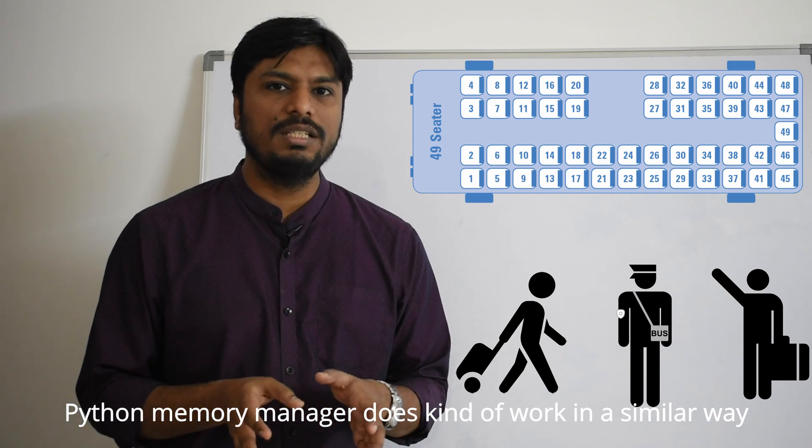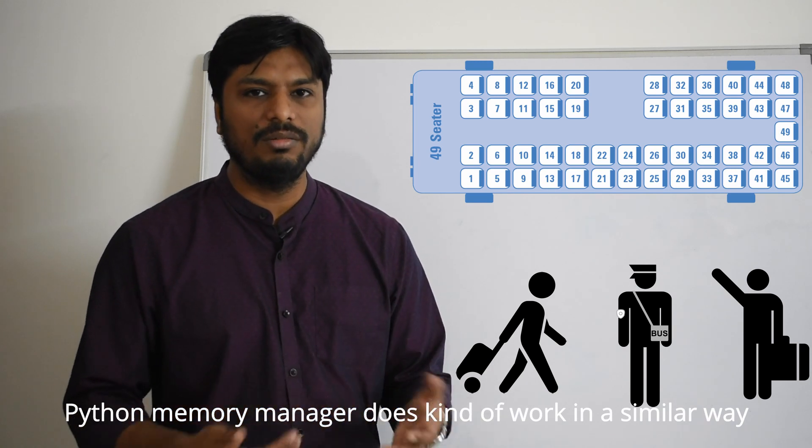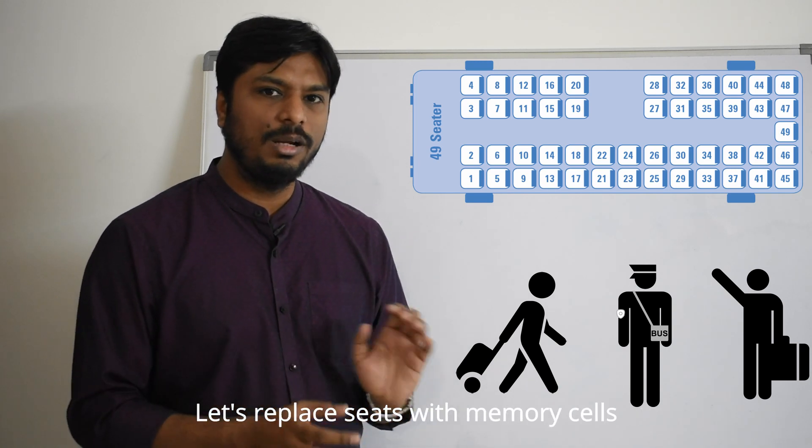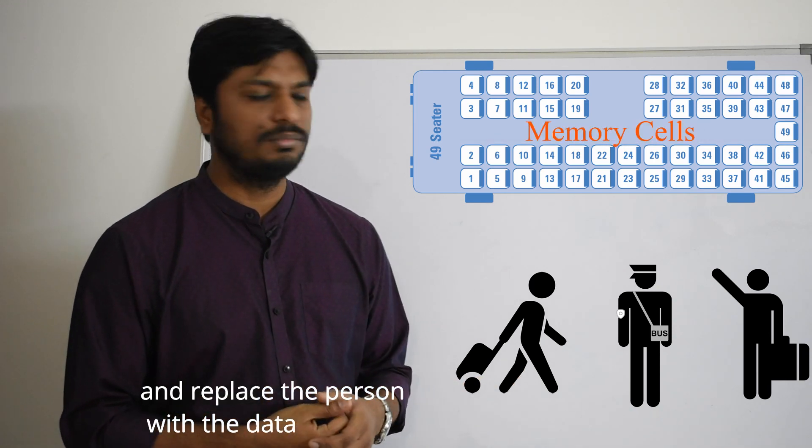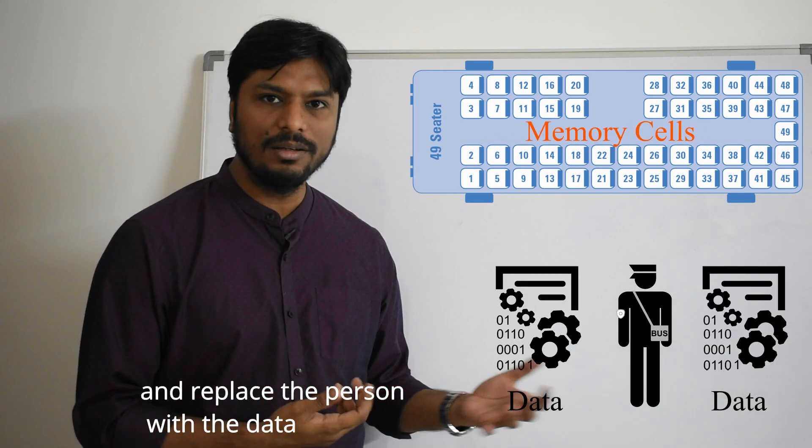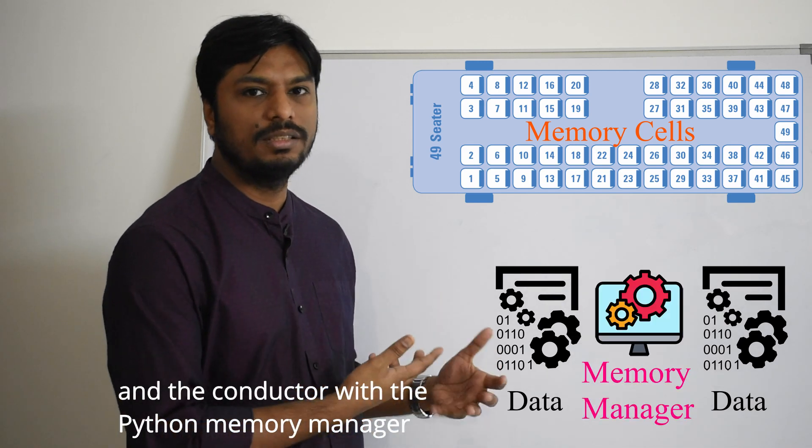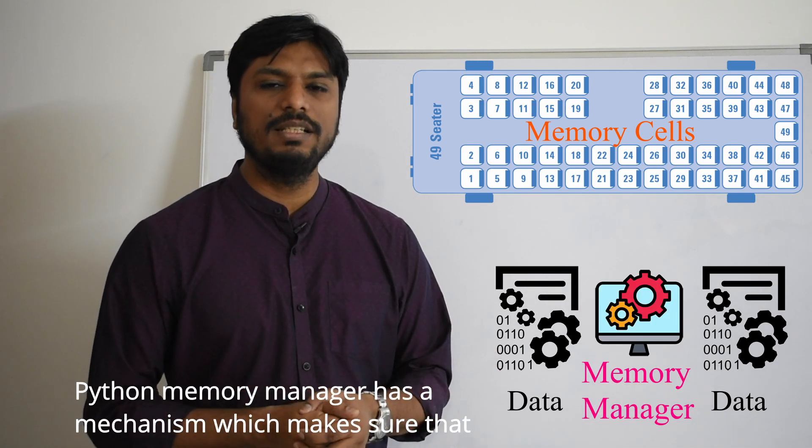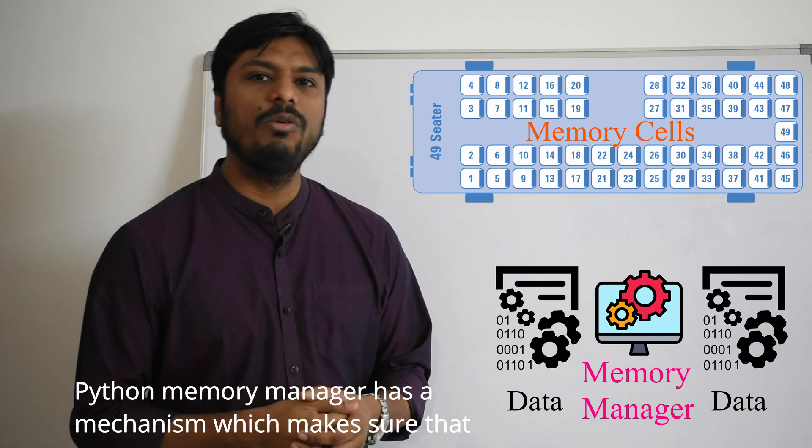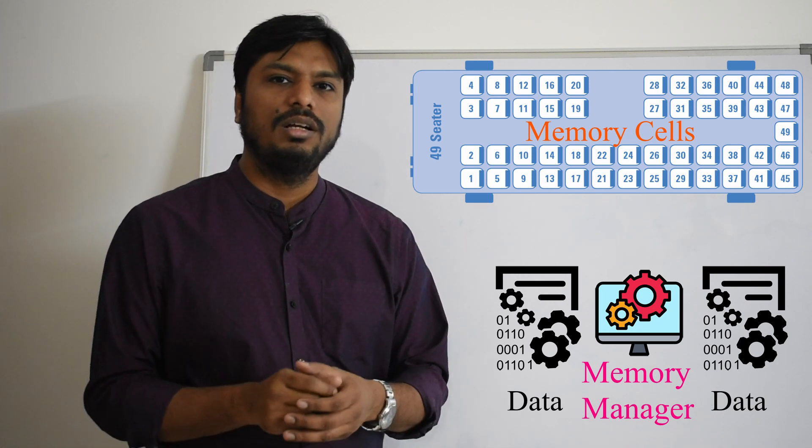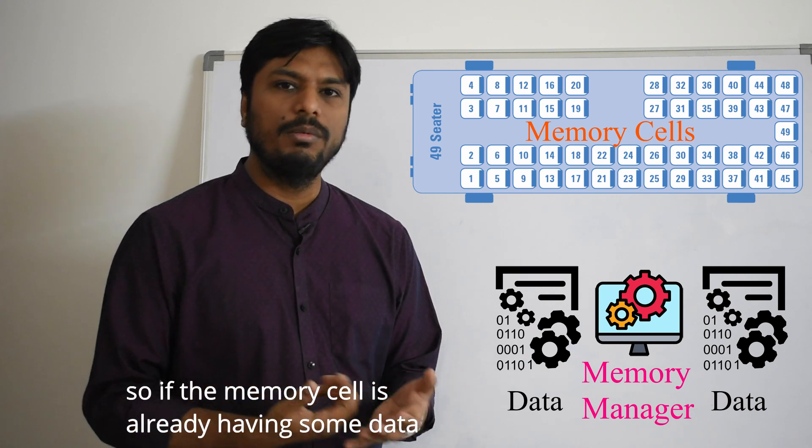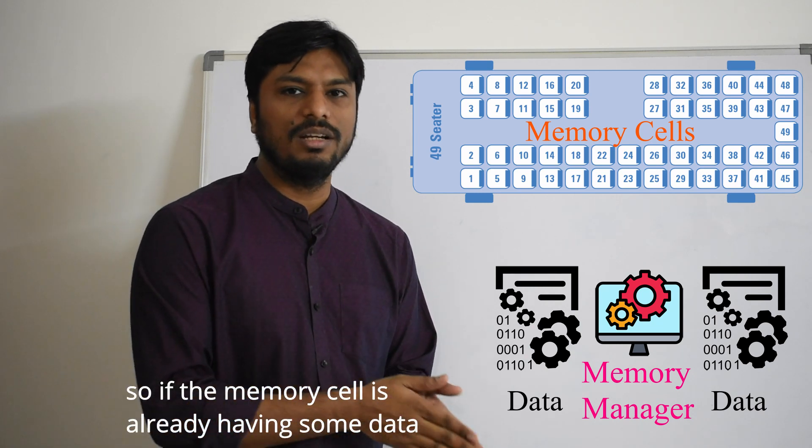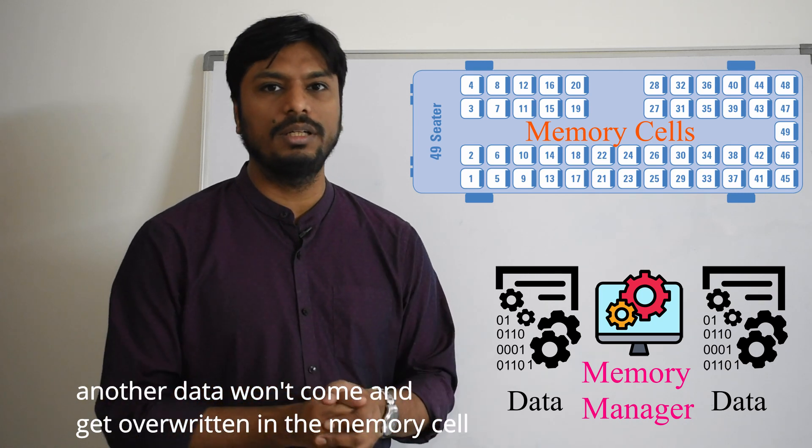So Python memory manager works in a similar way. Now let us replace seats with the memory cells, the person with the data, and the conductor with the Python memory manager. The Python memory manager has a mechanism which makes sure that data will not be overwritten over a particular memory cell. So if a memory cell already has some data, another data will not come and get overwritten on it.